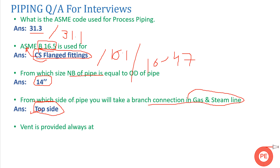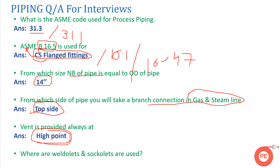Next question: at which location is a vent always provided? A vent is always provided at the highest point. This is because during purging, if you want everything inside the pipe to be removed from the system, the vent must be at a location where all contents can exit — so it is always at the highest point.